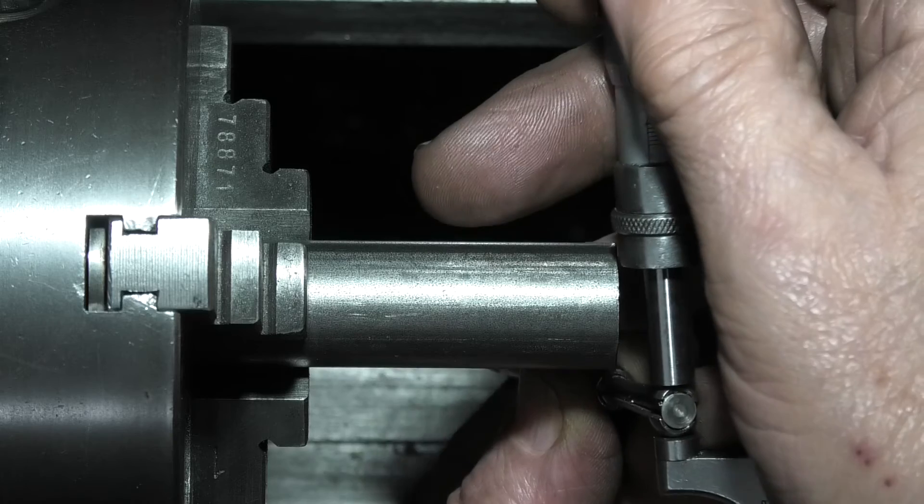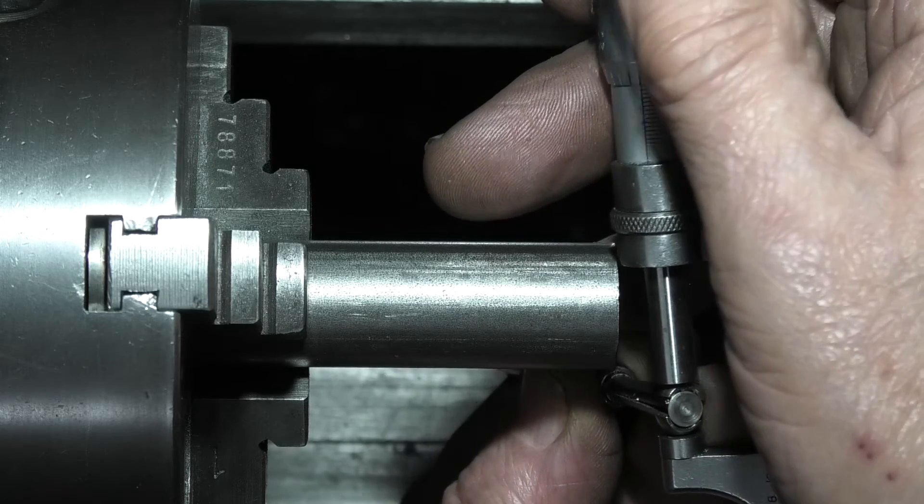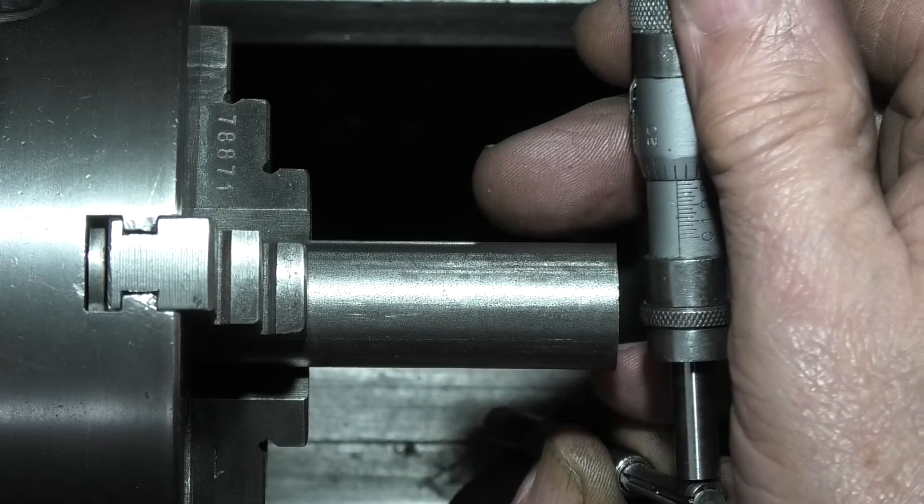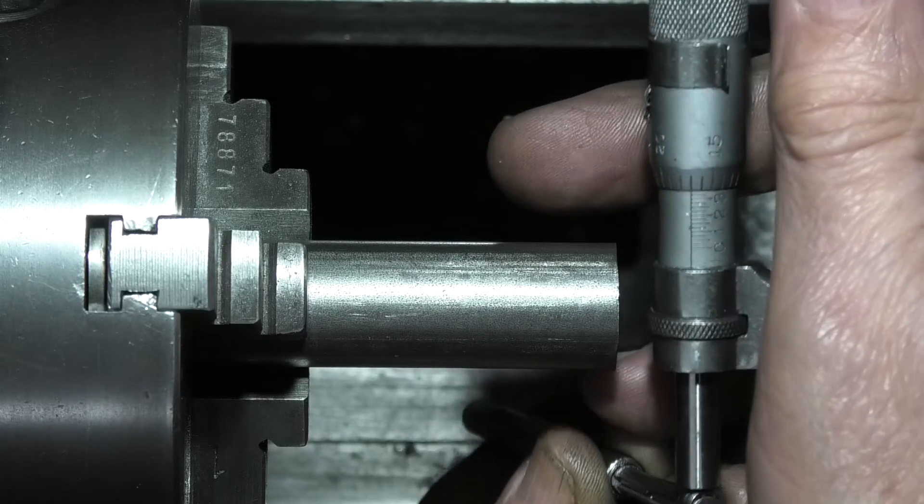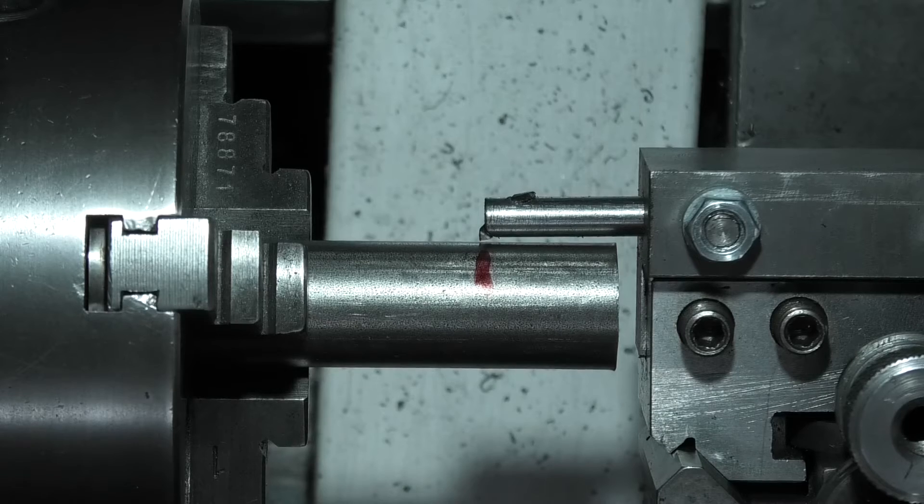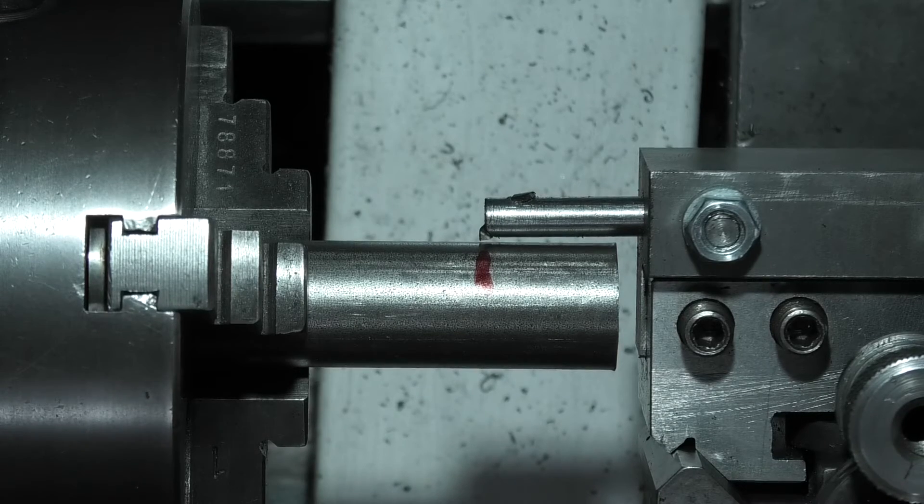0.3543 is the reamer size, which is 9 millimeters, so that's 12 thou smaller than the reamer. Now I've just marked the depth I've gone into that bore.